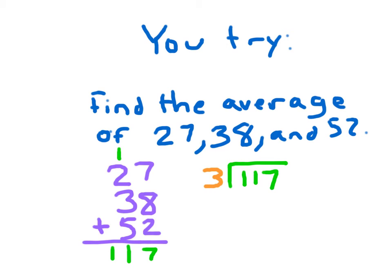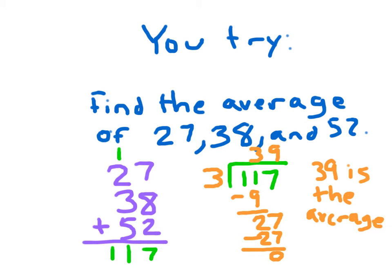3 cannot go into 1. 3 can go into 11, 3 whole times because 3 times 3 is 9. 11 minus 9 is 2. I bring down the 7, and 27 divided by 3 is 9. 9 times 3 is 27, and 27 minus 27 is 0. So 39 is the average.